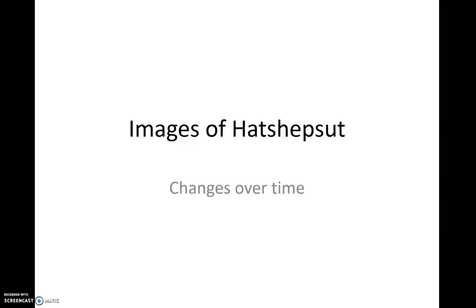Welcome to this overview of the changing imagery of Hatshepsut. The syllabus dot point talks about both the changing titles and image of Hatshepsut, but this video will focus particularly on the image. It would be a good idea to have next to you the table from our booklet which shows how Hatshepsut's status changed over time — from when she was the wife of Thutmose II, the queen, through to being the regent, and then the co-regent or king together with Thutmose III.